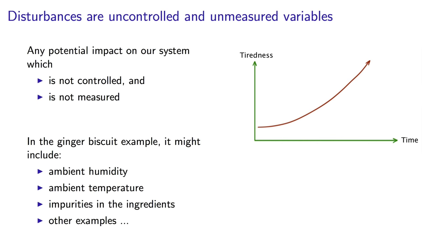A disturbance is defined as something that you do not have control of and something that you are not able to measure. So tiredness is a variable in our system that we call a disturbance. It's uncontrolled and unmeasured.